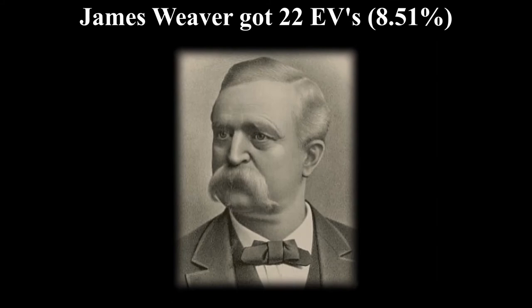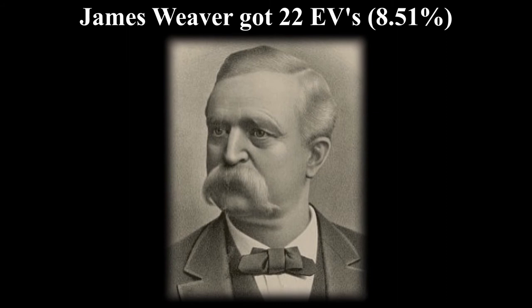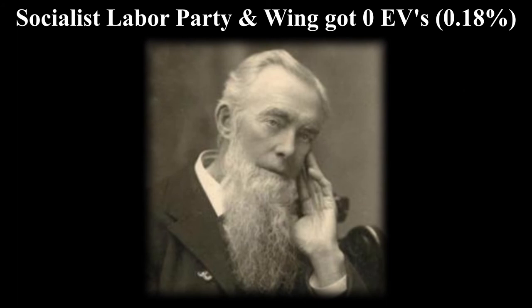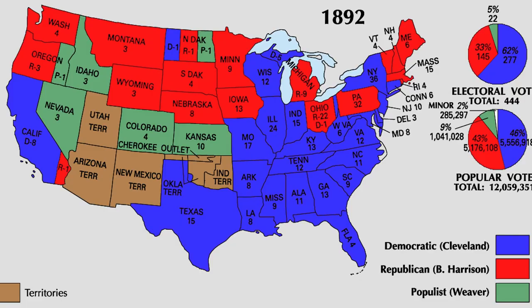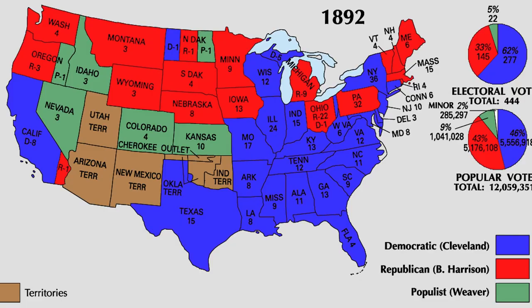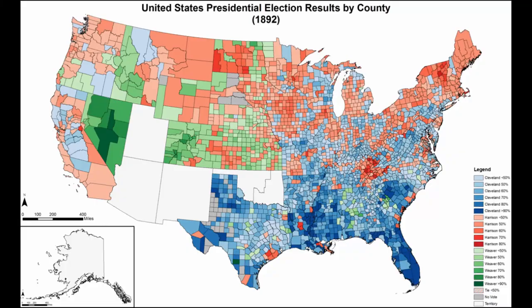The Prohibition Party and Bidwell got 2.24%, their best showing ever. The Socialist Labor Party and Wing only won 0.18% of the vote. The election of 1892 saw the first time two incumbents were defeated in back-to-back elections, and Weaver became the only third-party nominee to win a state between 1864 and 1912.